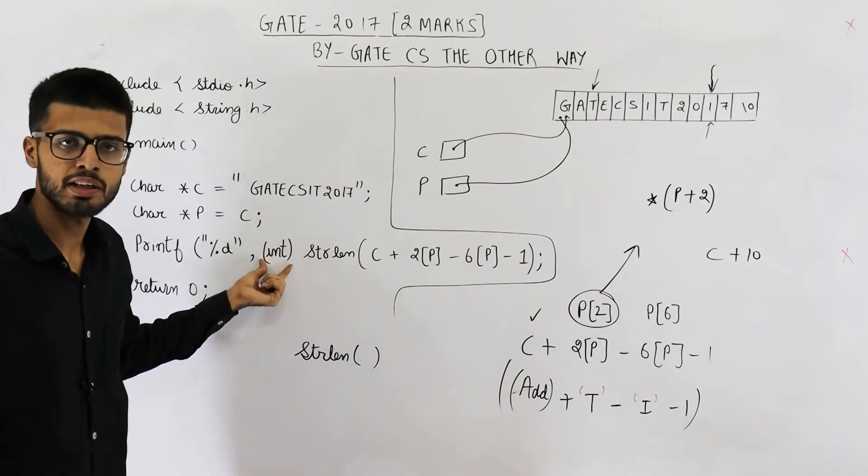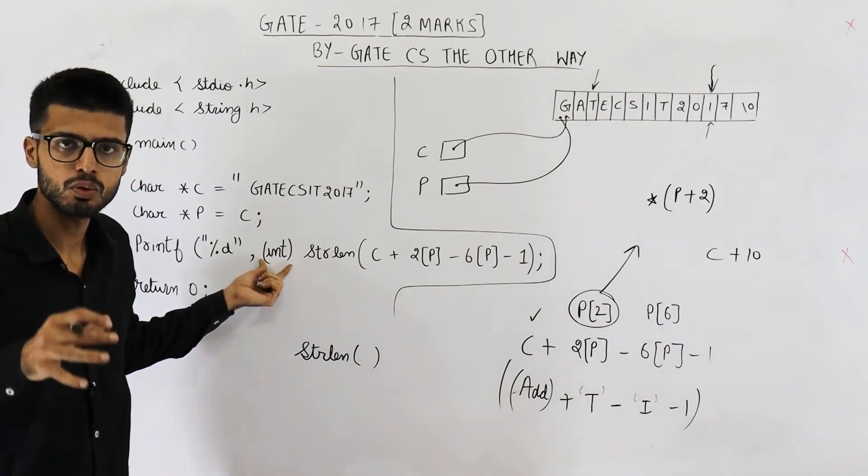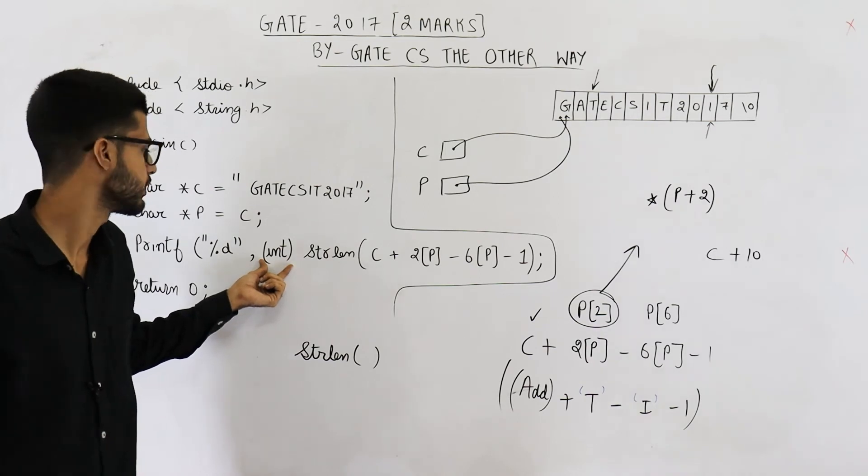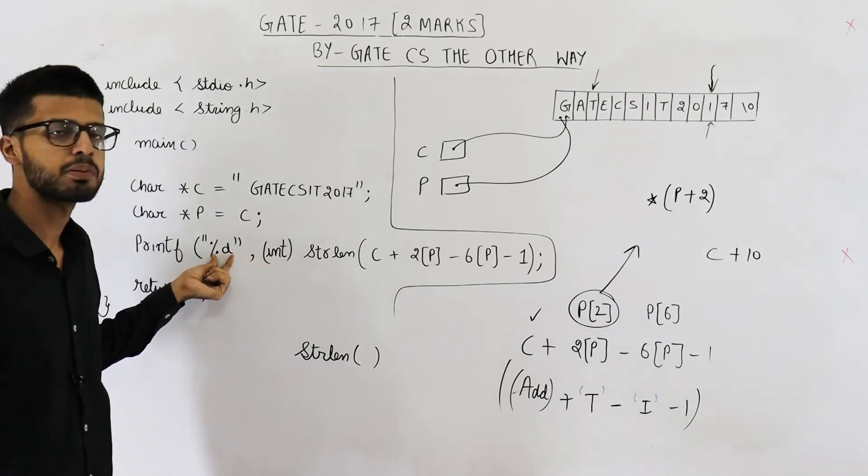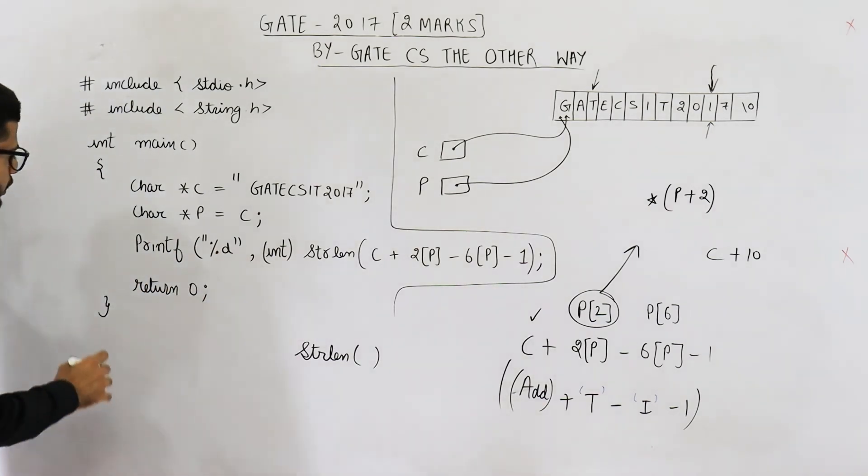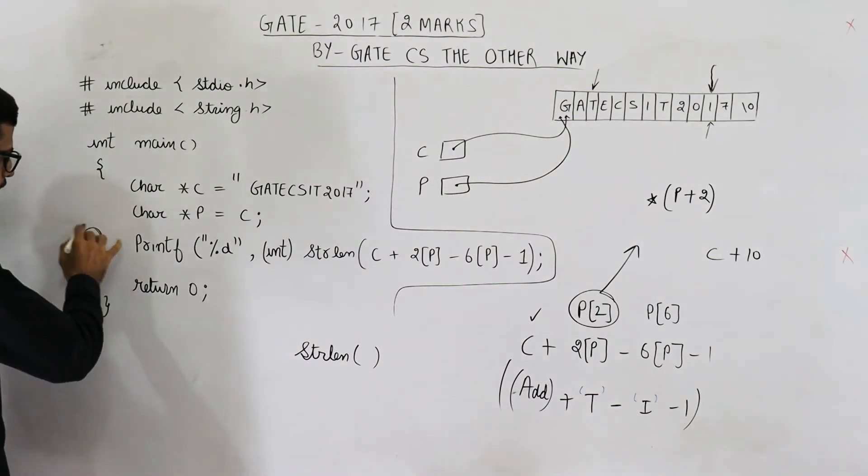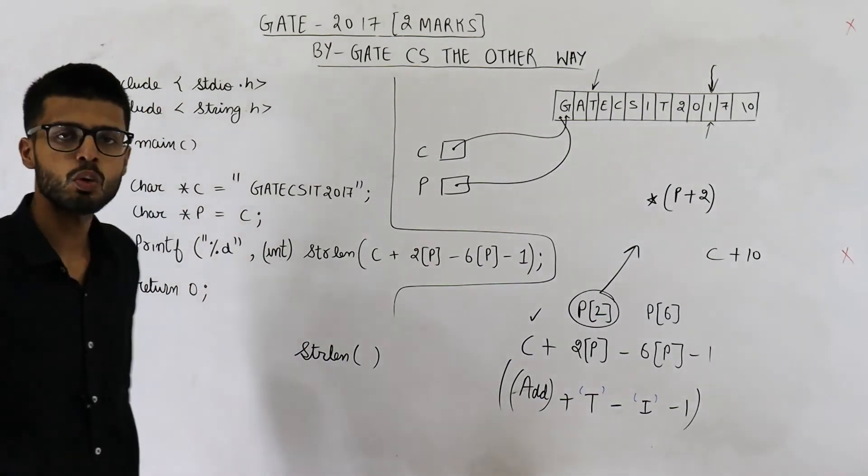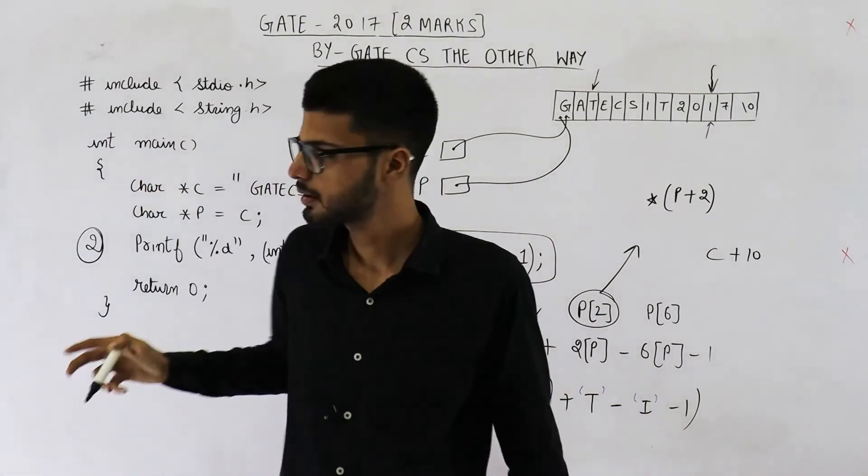So it will try to count the number of characters. Just keep on counting the characters as you encounter them. First character, second character and the string ends. So only two characters are there. That means this function string length is going to return 2. That 2 will be converted into an integer. So we are having a value 2 that is of integer type. And here we are having percent d so integers can easily be printed. So printf is going to print 2. Output of this entire code is 2. So answer is 2.